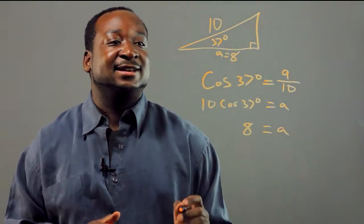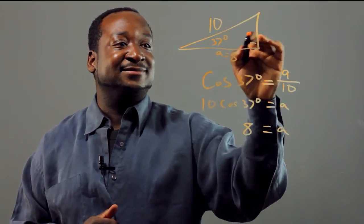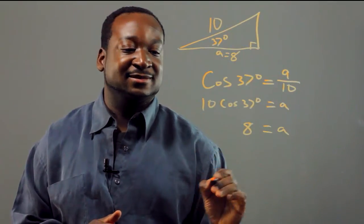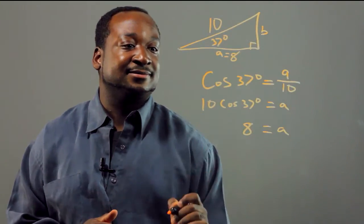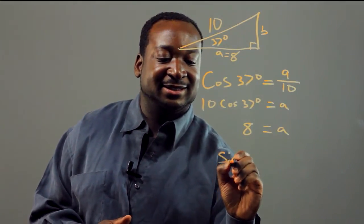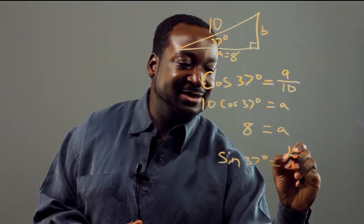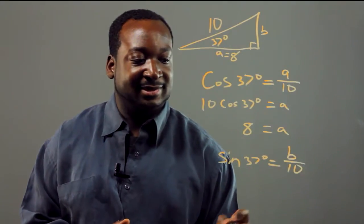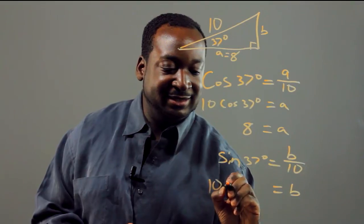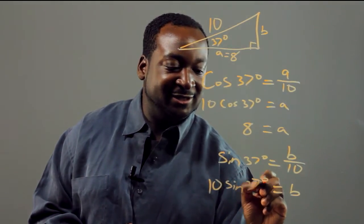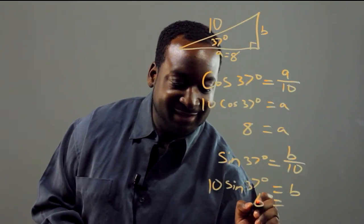Great. Now that we have this side, we can solve the other side using the sine function. Sine is a ratio of the opposite side over the hypotenuse. So here we have the sine of 37 degrees equals this side — we'll call it b — over 10. So b equals 10 times the sine of 37 degrees, which gives us b equals 6.